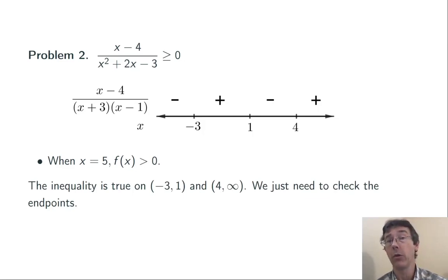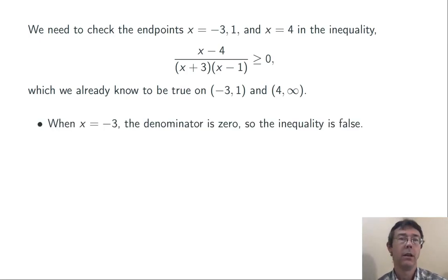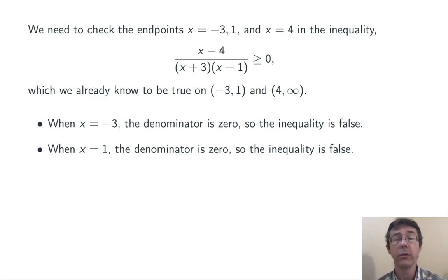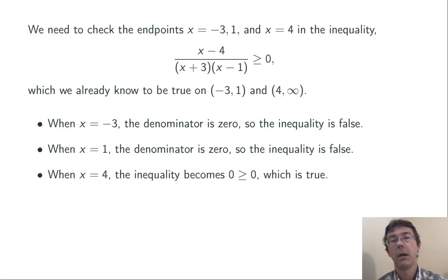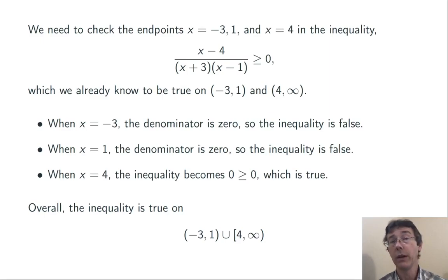I'm interested in where this function is greater than or equal to zero, so I know the inequality is going to be true from negative three to one, and from four to infinity. I still need to check the endpoints. I need to plug negative three, one, and four back into this inequality and see if I get a true statement. When I plug in negative three, I get a zero in the denominator, so the inequality can't be true there. Same thing when x is one — dividing by zero means the inequality is false. But when I plug in x equals four, I get zero greater than or equal to zero, which is a true statement, so four needs to be included. The final answer is the open interval negative three to one, union four to infinity, where four gets a closed bracket and infinity gets an open parenthesis.